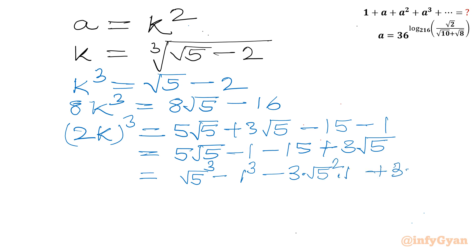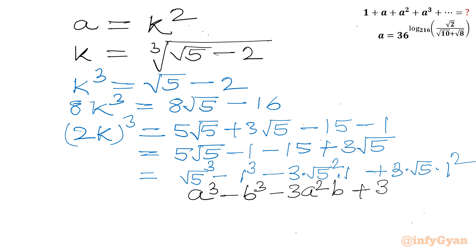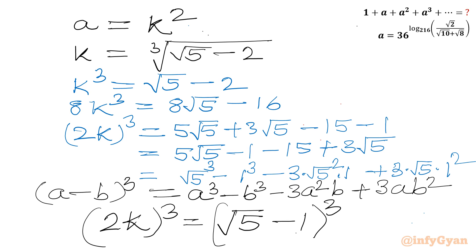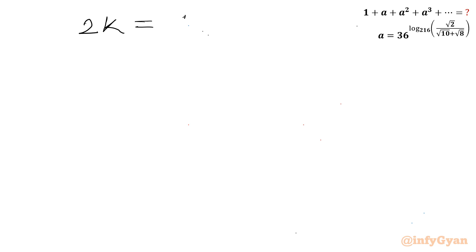We recognize this matches the identity a³ − 3a²b + 3ab² − b³ = (a − b)³. Here a = √5 and b = 1, giving (√5 − 1)³. So the right-hand side equals (√5 − 1)³ and the left-hand side is (2k)³. Taking cube roots of both sides: 2k = √5 − 1, so k = (√5 − 1)/2.